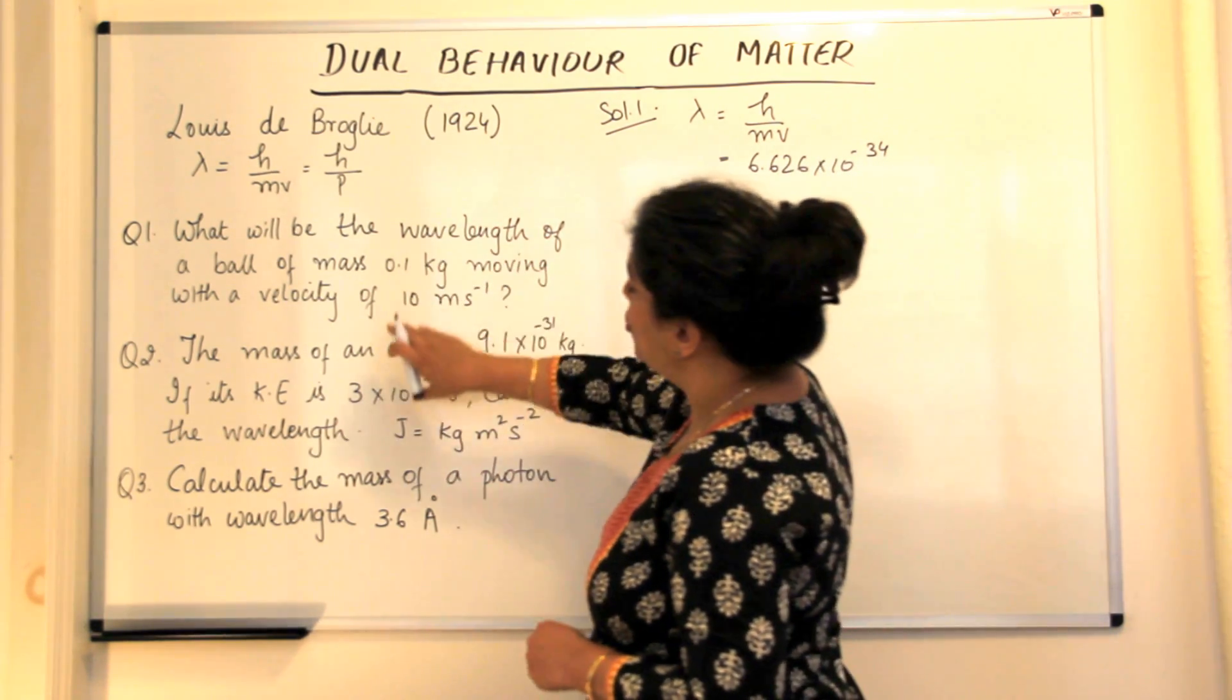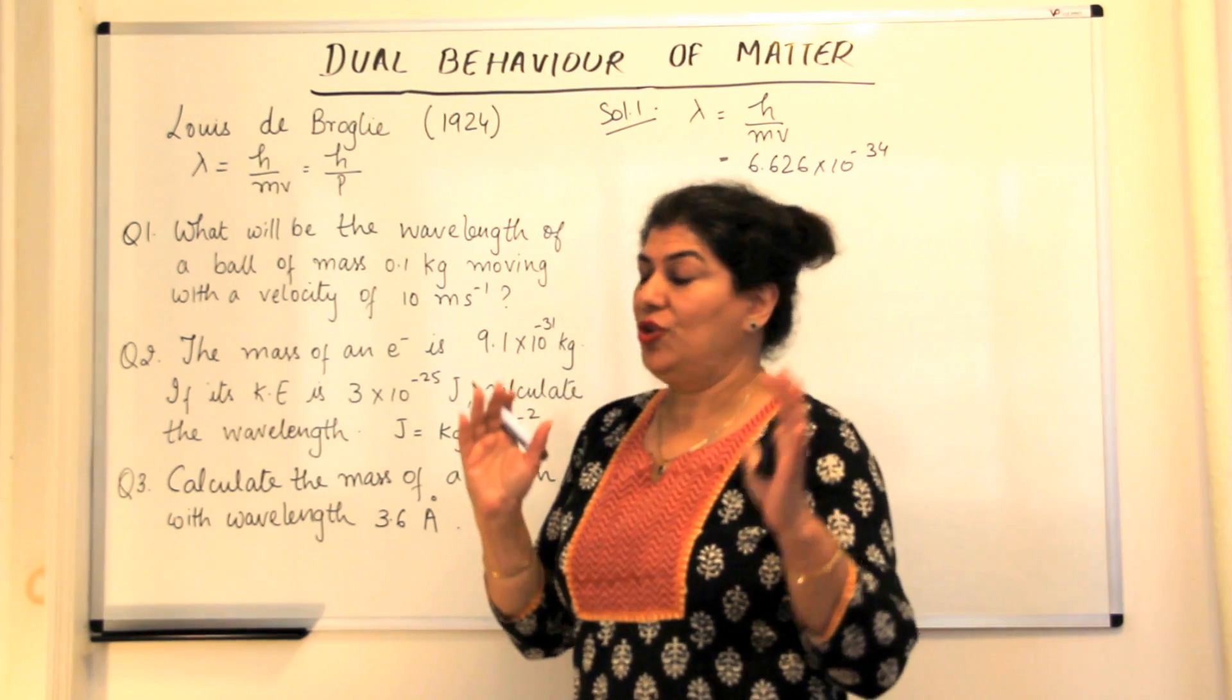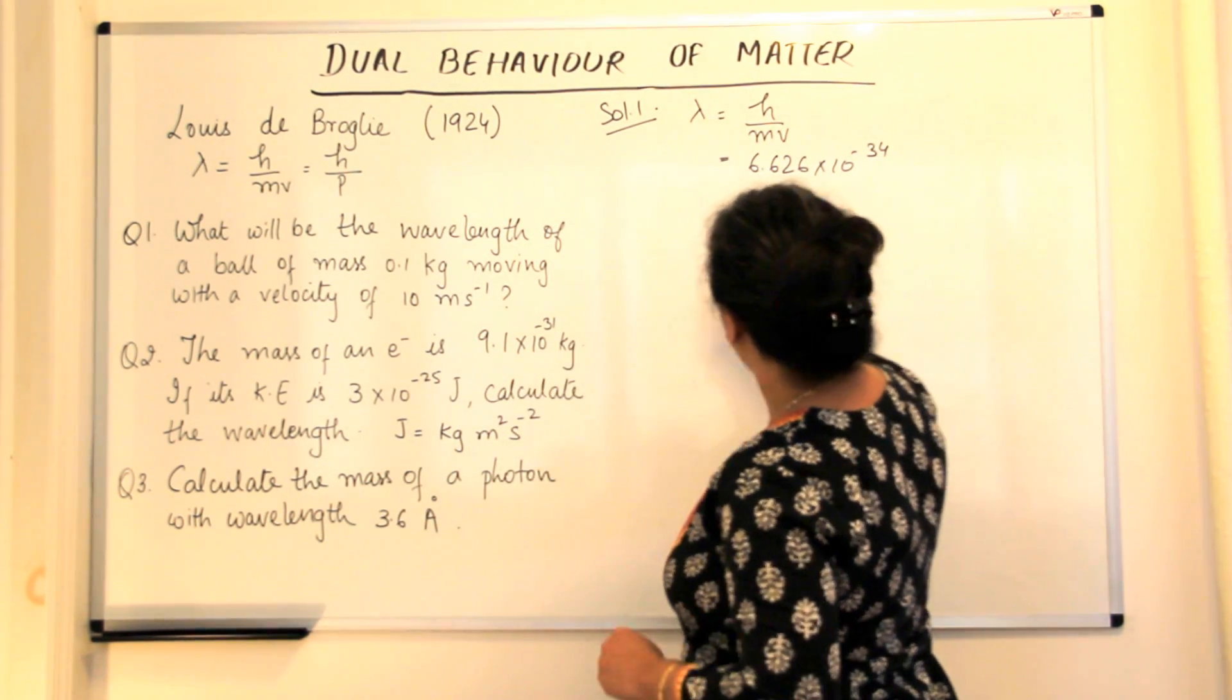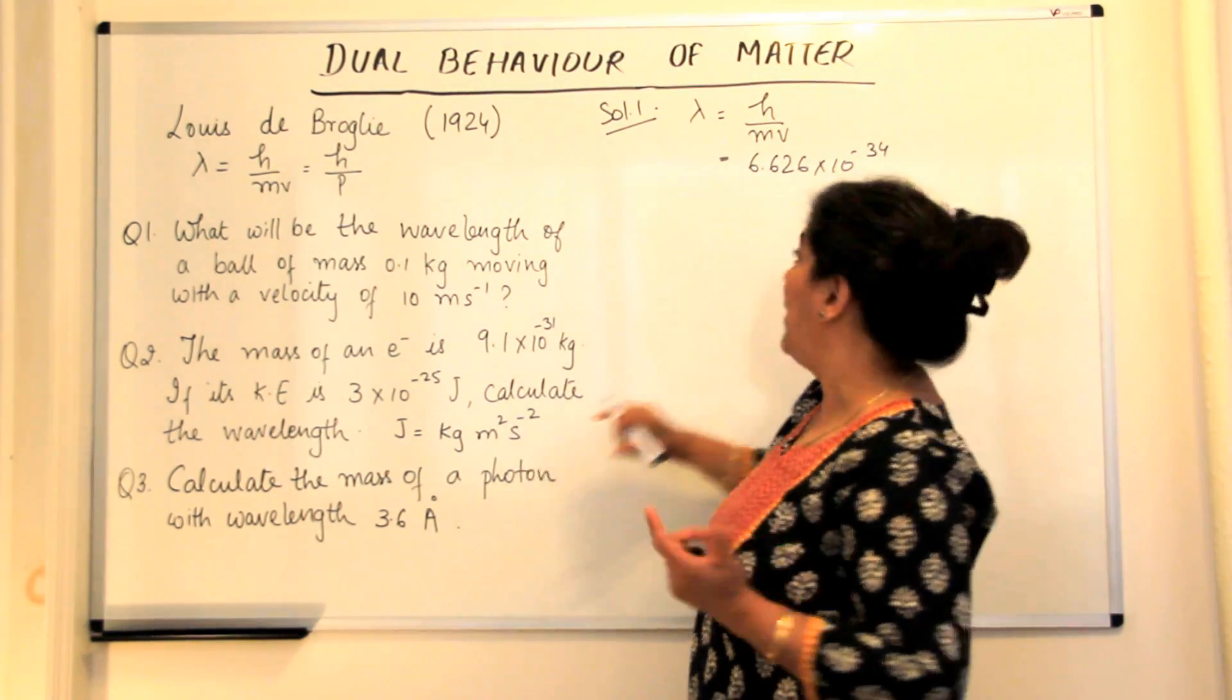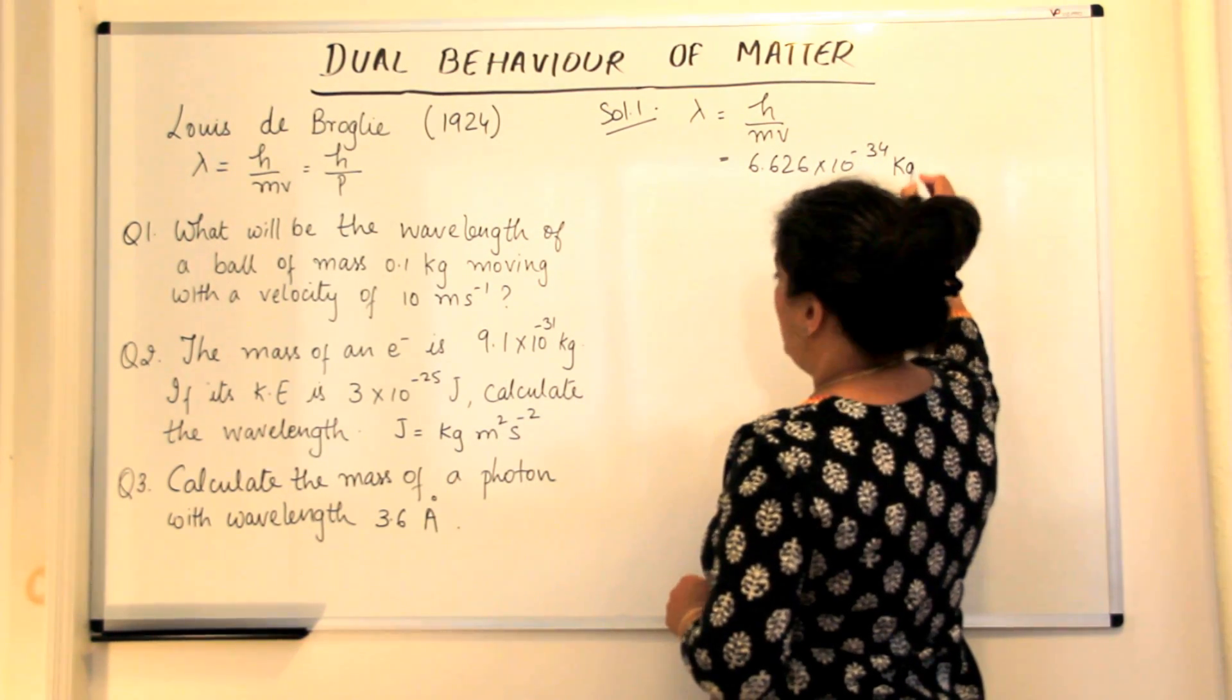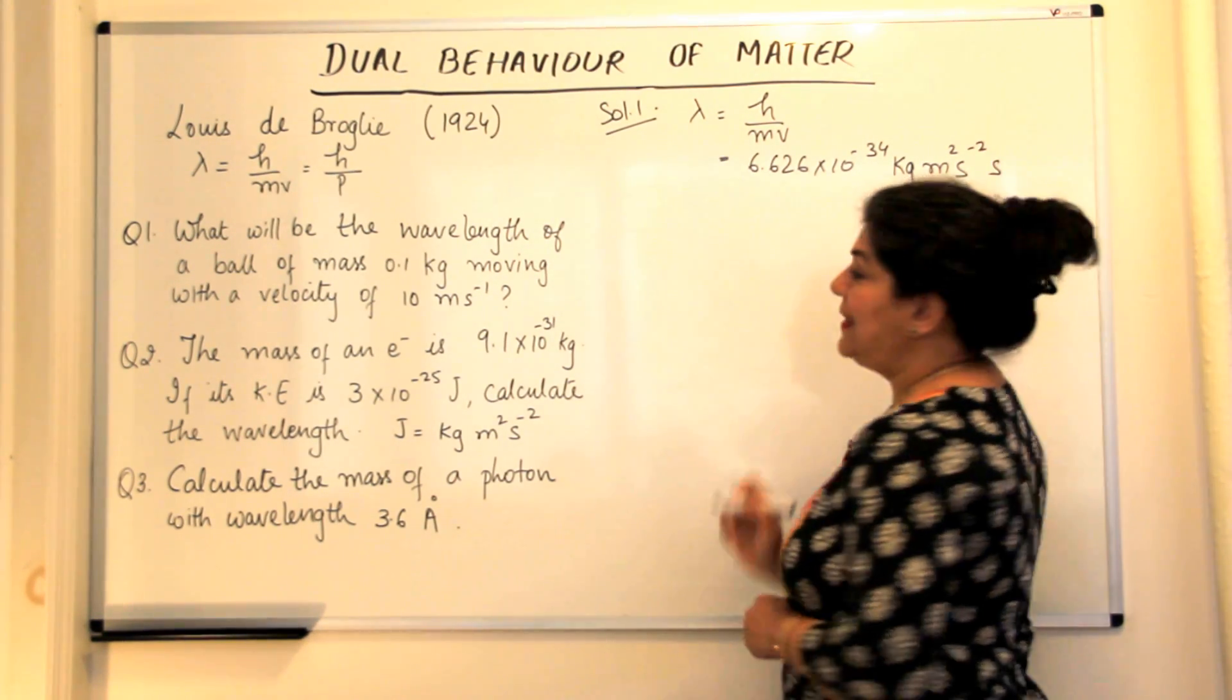Now I would not like to use joule second because I would like to cancel out the units to make sure that the values I've plugged in are right. So instead of using joule second, one joule is equal to kg meter square second to the power of minus 2. So we'll use this unit instead. So it would be kg meter square second to the power minus 2 second.